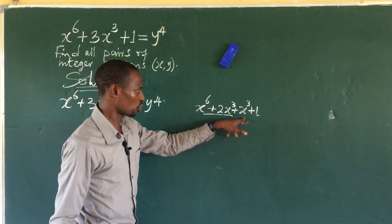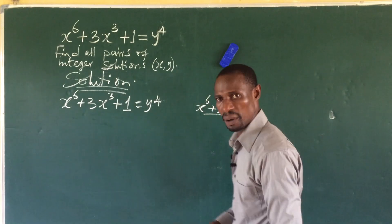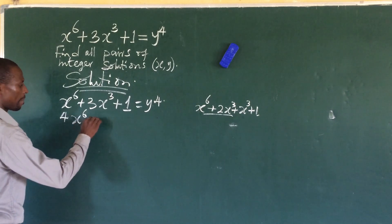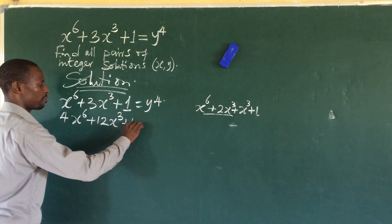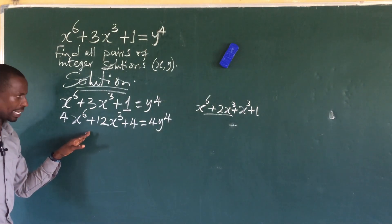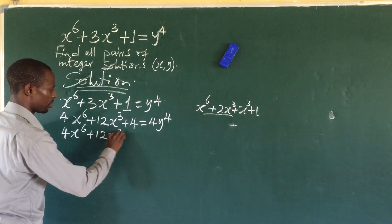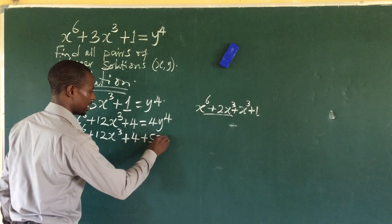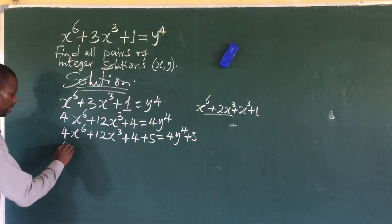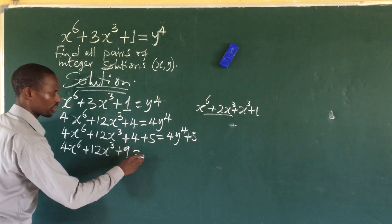To handle this and get everything as a power of two, thanks to the hint from Dr. PK, we multiply through by 4. This gives us: 4x⁶ plus 12x³ plus 4 equals 4y⁴. We still have a challenge, so let's add 5 to both sides of the equation. That gives us: 4x⁶ plus 12x³ plus 4 plus 5 on the left, and 4y⁴ plus 5 on the right.